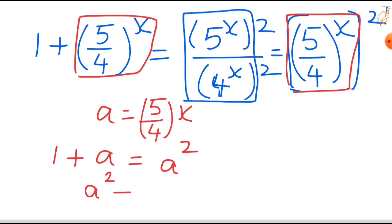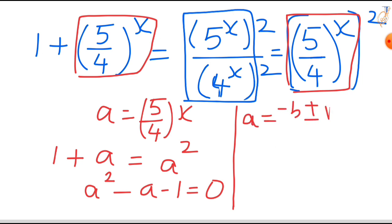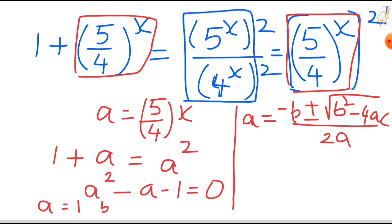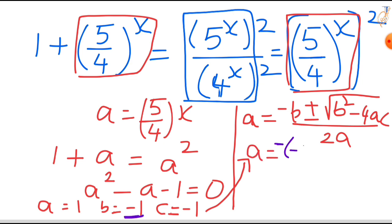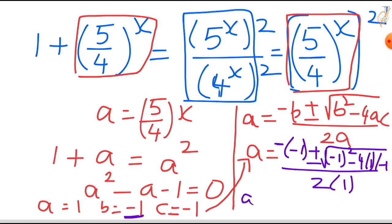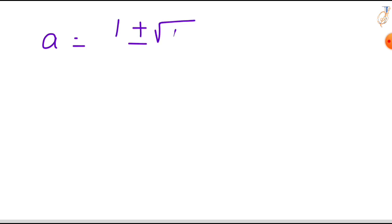Our equation becomes 1 + a = a², which we can rewrite as a² − a − 1 = 0. This is a quadratic equation. Using the quadratic formula: a = (−b ± √(b²−4ac)) / 2a. Here a=1, b=−1, c=−1. Substituting: a = (1 ± √(1+4)) / 2, so a = (1 ± √5) / 2.